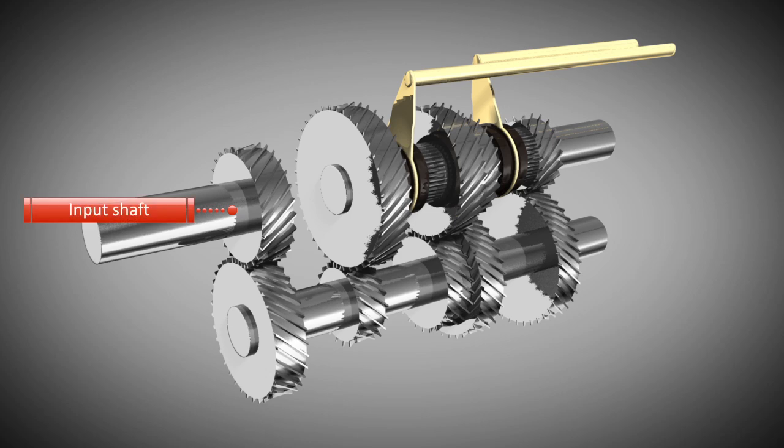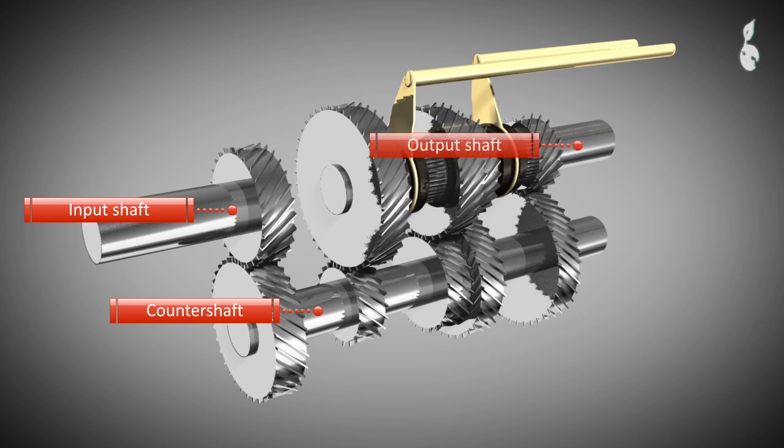The input shaft is connected to the engine. The rotational energy of the input shaft is transferred to the counter shaft that transfers its energy to the gears of the output shaft. The output shaft is connected to the wheels of the vehicle.